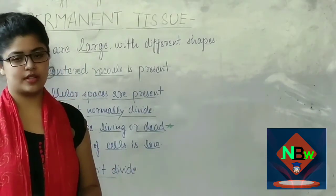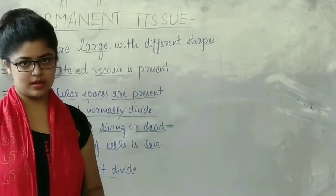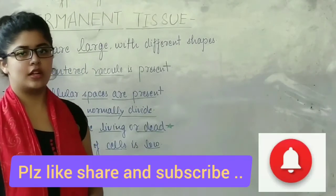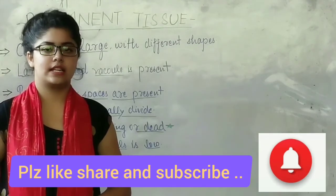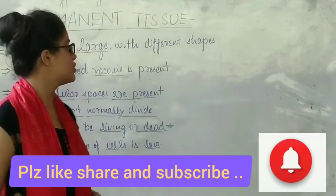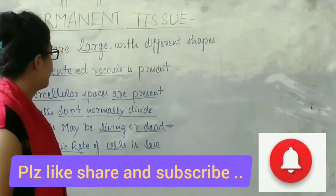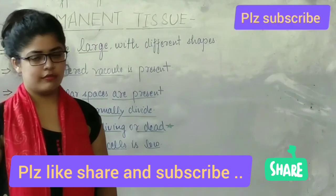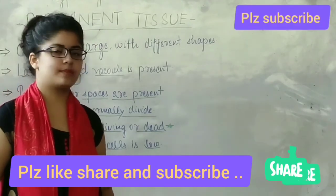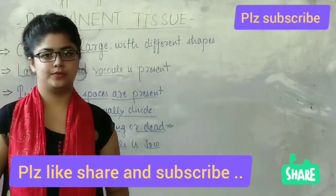Simple permanent tissue is of three types: the first is parenchyma, the second is collenchyma, and the last is sclerenchyma. That is all for today's video — thank you, and we will meet in the next part.